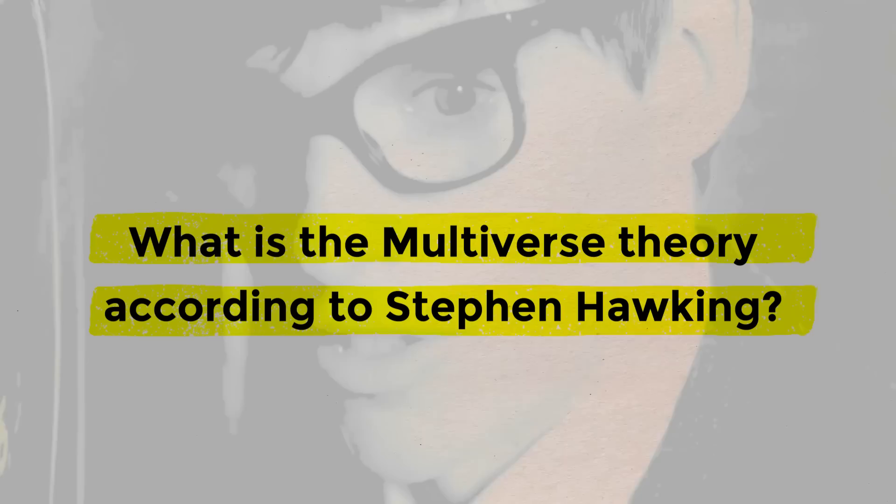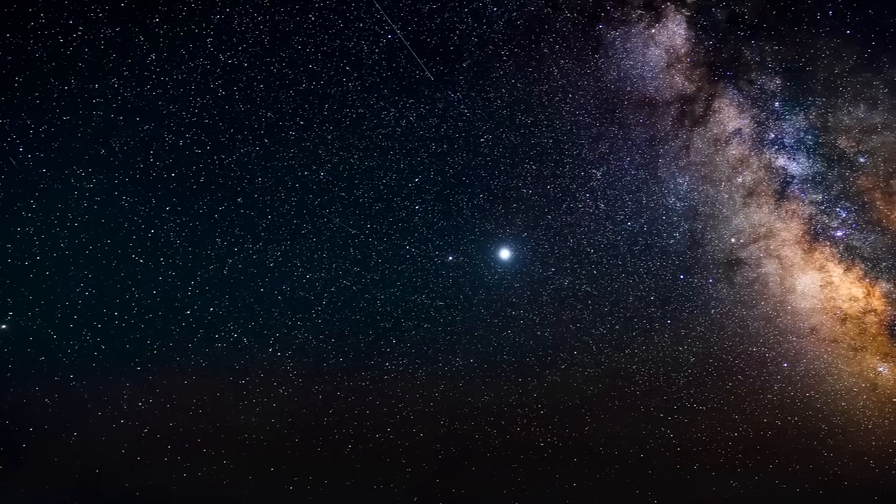What is the multiverse theory, according to Stephen Hawking? The multiverse theory argues that our universe, with hundreds of billions of galaxies and practically innumerable stars spanning tens of billions of light years, may not be the only one.